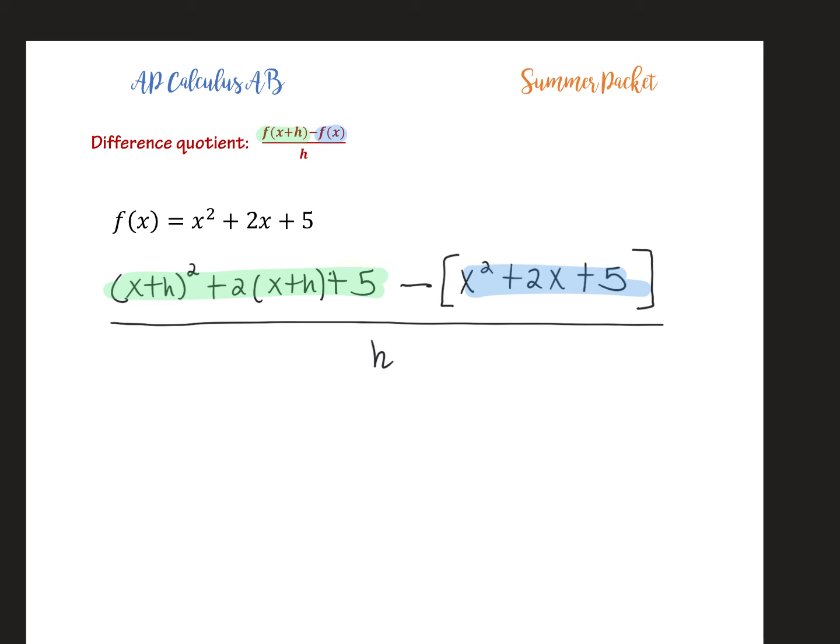So then let's simplify the numerator. It's going to simplify quite a bit. To do (x+h)² remember you cannot distribute this exponent, this exponent of 2, inside parentheses ever, as long as there's addition or subtraction. So I can't do that. Instead, I need to think of this really as (x+h) times (x+h).